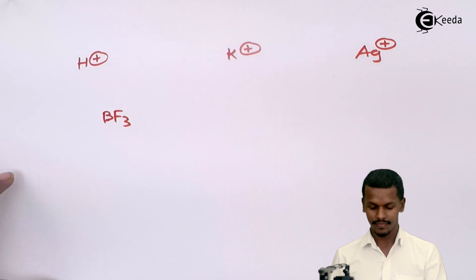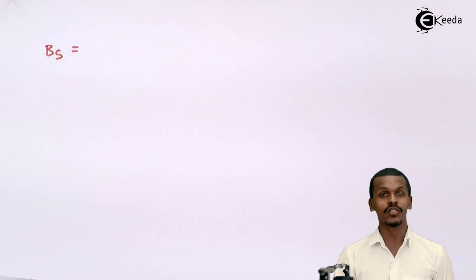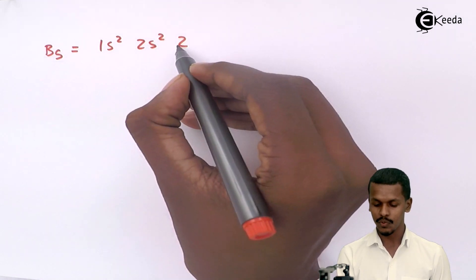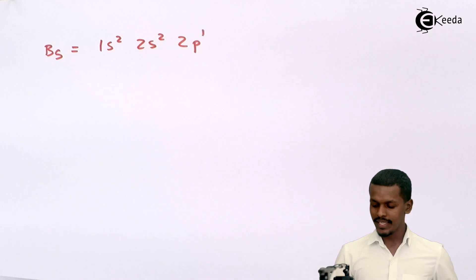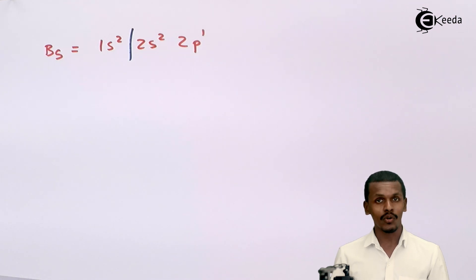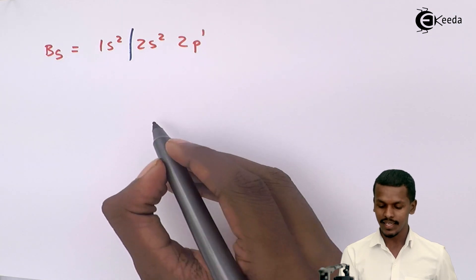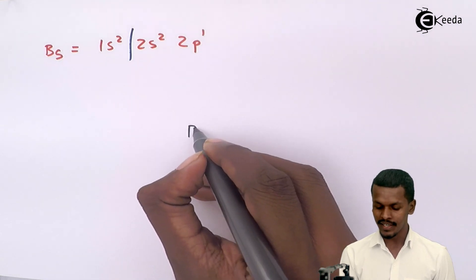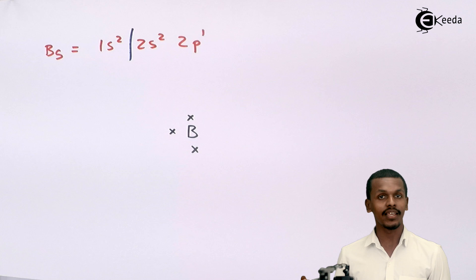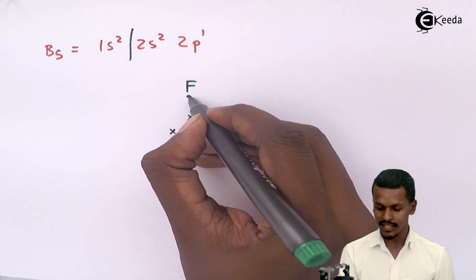Boron has the electron configuration 1s² 2s² 2p¹, so the outermost orbit of boron consists of three electrons. It forms bonds with three fluorine atoms. The electronic structure of BF₃ can be written with these three outermost electrons of boron each forming a bond with one fluorine atom.